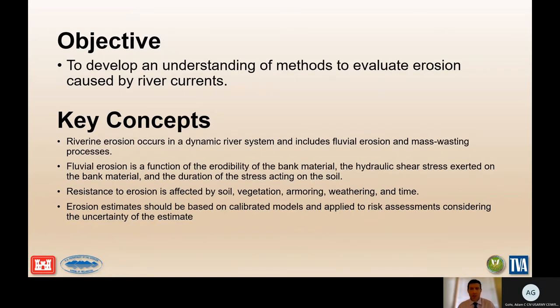Some of the key concepts we'll be covering today include that riverine erosion occurs in a dynamic river system. It includes fluvial erosion and mass wasting. Fluvial erosion is a function of the erodibility of the bank material, the hydraulic shear stress exerted on the bank material, and the duration of the stress acting on that soil.